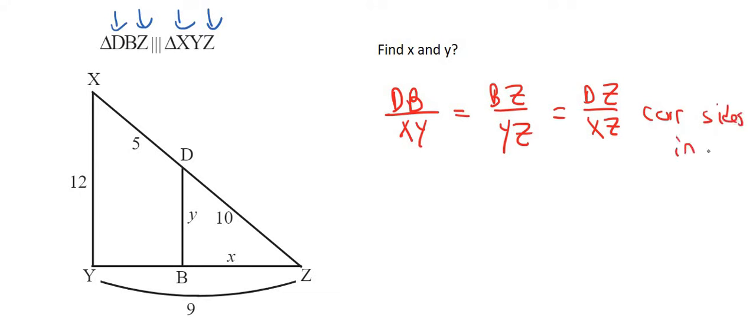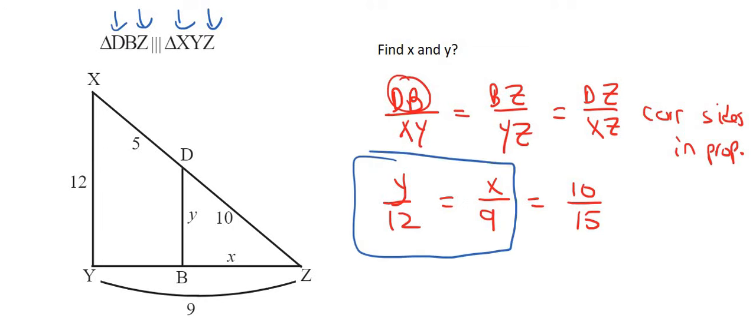Now you just go full everything in. So DB is Y, XY is 12, BZ is X and YZ is 9, DZ is 10 and XZ is 15. Now to find X for example you wouldn't choose these two because there's an X and a Y. You don't want to do that. You can't solve it if there's an X and a Y. So let's use these two.